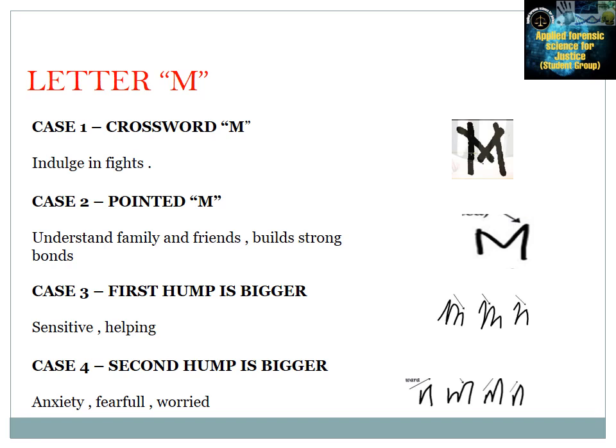Now, Letter 'M.' Case 1 — Crossword M (arms written like a crossword): indicates involvement in fights. Case 2 — Pointed arm tip: indicates understanding family and friends and building strong bonds. Case 3 — First hump bigger: indicates a sensitive and helping nature. Case 4 — Second hump bigger: indicates anxiety, fearfulness, and worry.